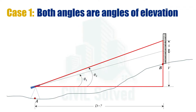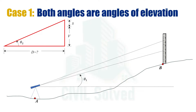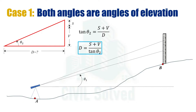Since distance d is required, we consider a right-angle triangle in which the base is d and the perpendicular is the combination of v and s. In the stadia method, most of the time we are given the hypotenuse as the distance calculated by formula. In this case, since we have the perpendicular and the base, we use the trigonometric relationship: tan(theta 2) equals (s plus v) divided by d.